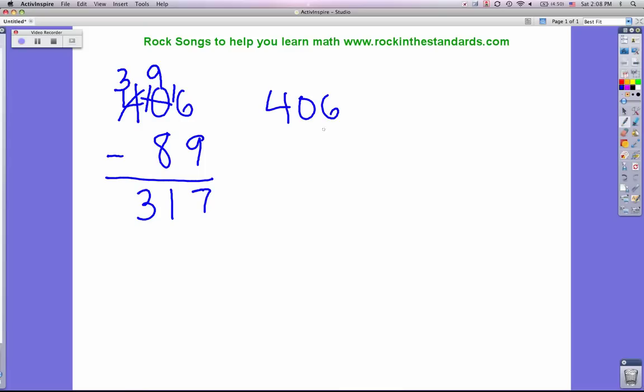Same problem: 406 minus 89. Okay, so 6 minus 9, can't do it. Go to regroup from the zero, and what you do is draw a box around the zero along with any other zeros until you get to an actual number, not a zero—the 4 in this case. So you're looking at this number in the box, which is 40, and I'm going to regroup from the 40 and make that 39.